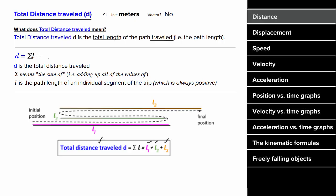That's why a formula for distance can be thought of as the summation of all the individual positive path lengths. The units for distance are meters. It is not a vector, and it's always positive or zero. It can never be negative.